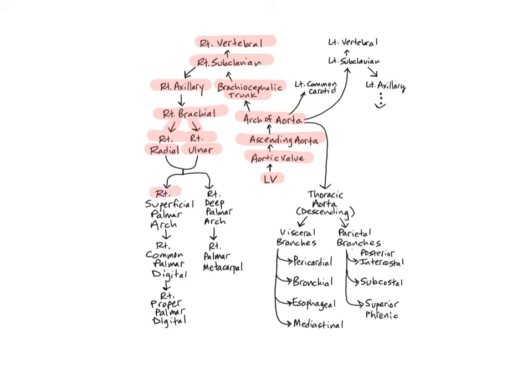The right superficial palmar arch is formed by the superficial branches of the ulnar and radial arteries, and supplies the muscles, bones, joints, and skin of the palm and fingers. The arch curves across the palm at the bases of the metacarpals, giving rise to the common palmar digital arteries, which divide into the proper palmar digital arteries that supply the fingers.